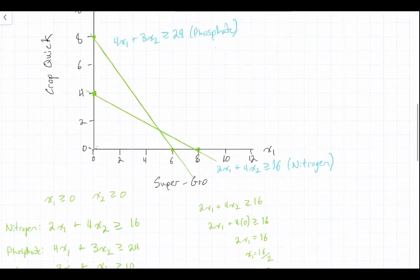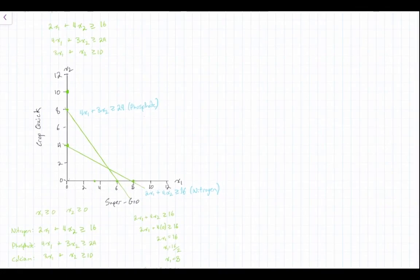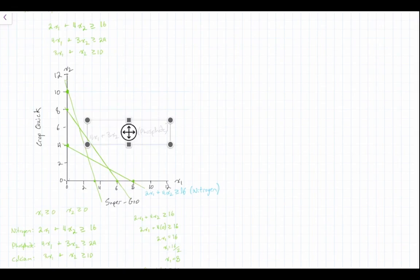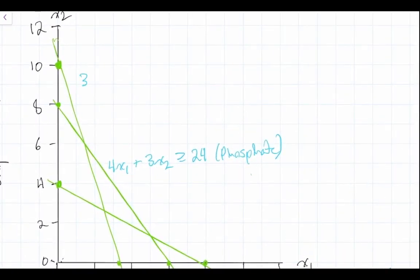x1 equals 3.333 is not as clean a number, but we can still plot it — it's approximately there on the graph. We draw a line through these two points and label our new constraint: 3x1 plus x2 greater than or equal to 10, for calcium. And with that, we have plotted all of our constraints.